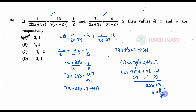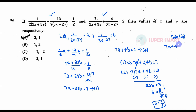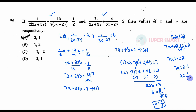Simplifying, b is equal to 1 by 4. Substituting b back: 7a plus 1 is equal to 2, so 7a equals 2 minus 1, which gives a equal to 1 by 7.